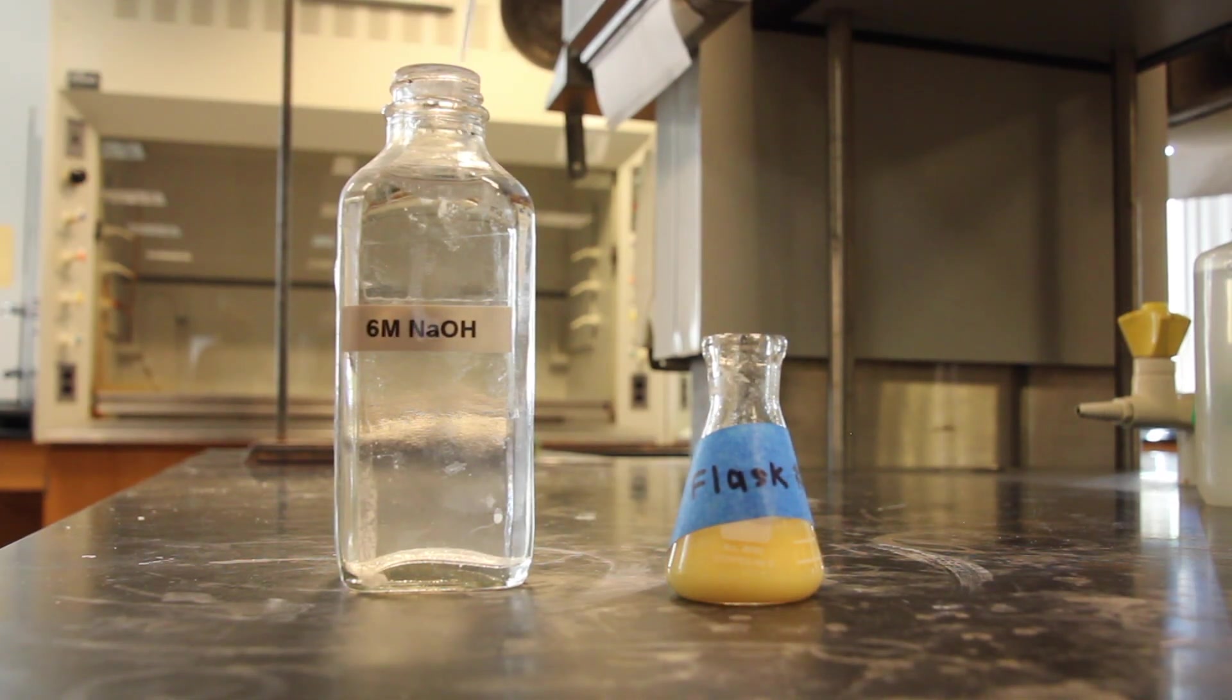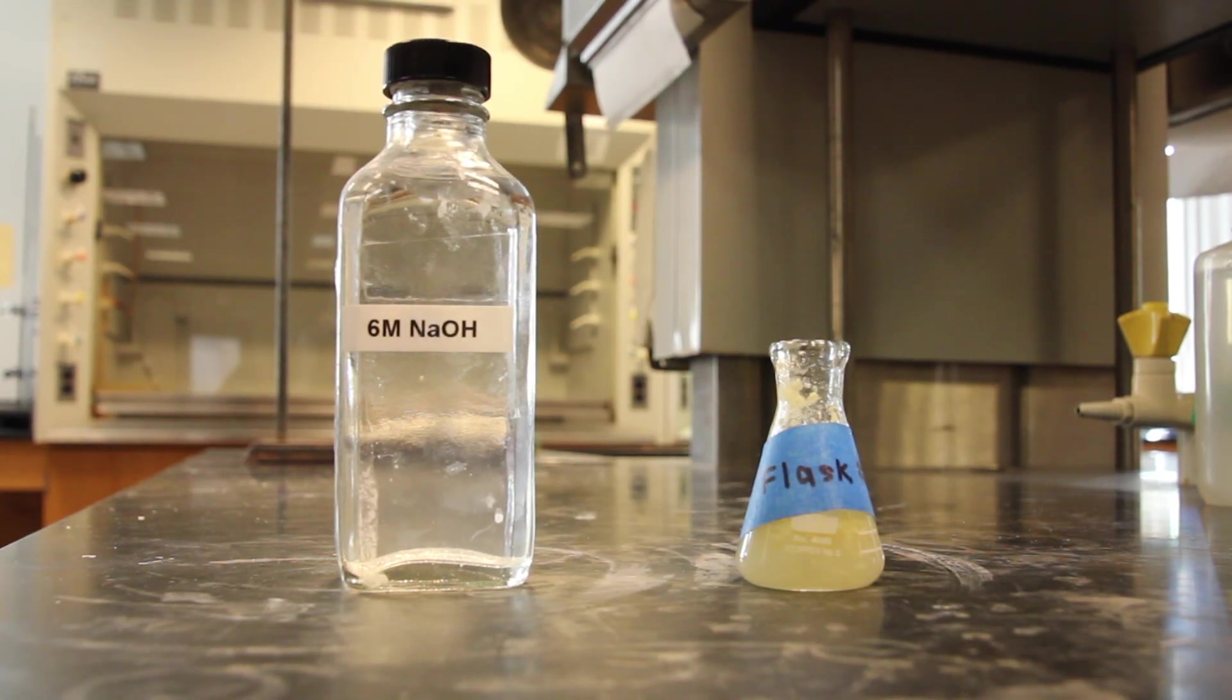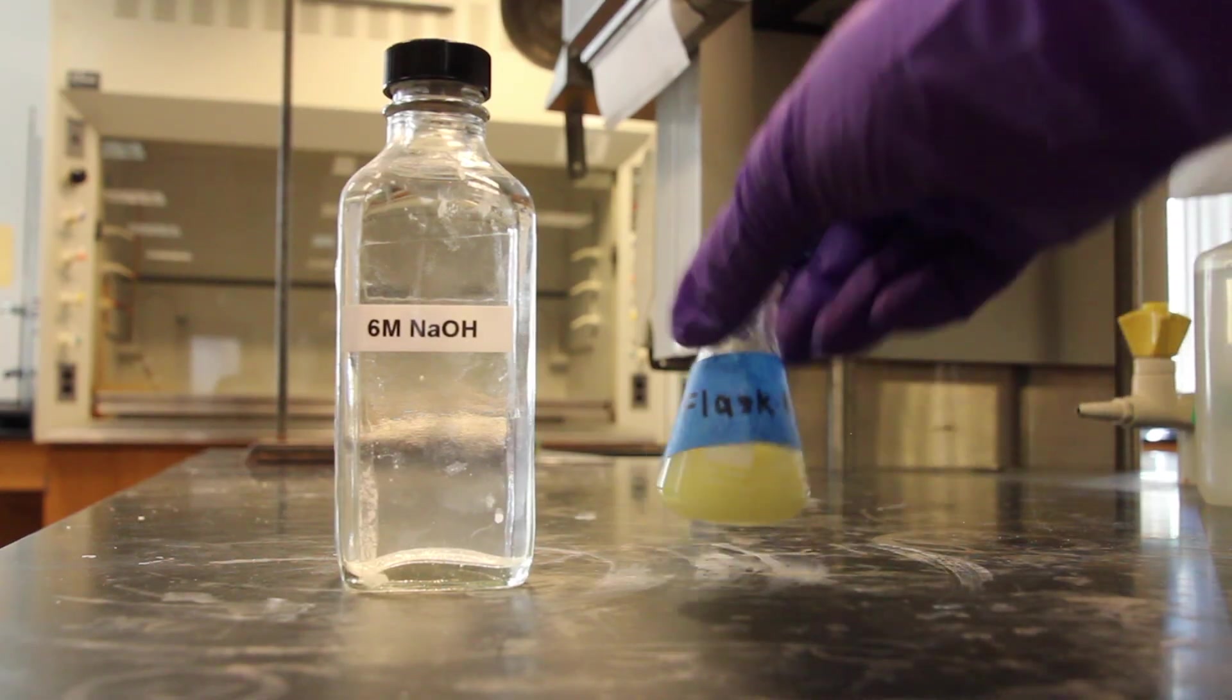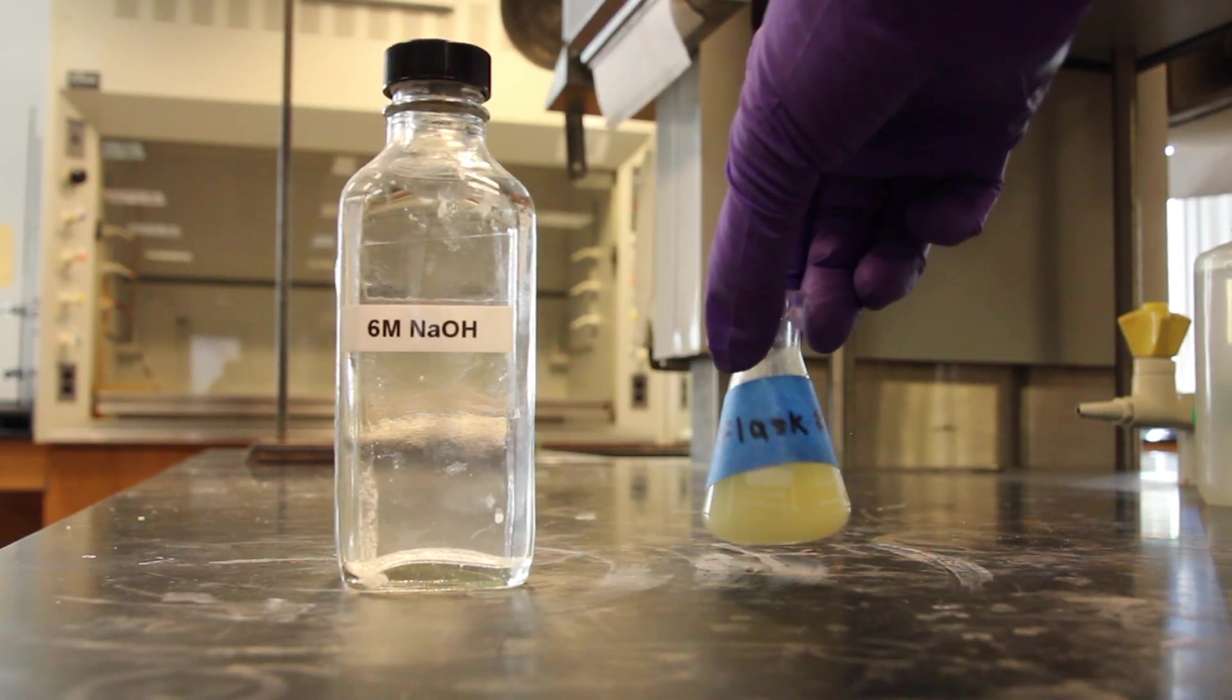Calculate the volume of 6 molar sodium hydroxide necessary to neutralize all of the hydrochloric acid used. Swirl the flask contents and check the pH of the solution while continuing to add NaOH until the contents of the flask are basic.